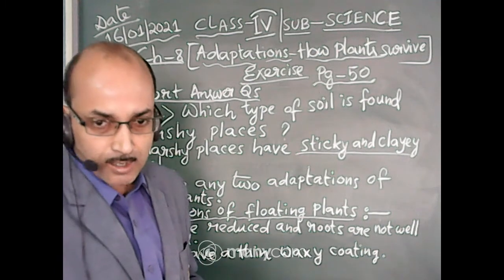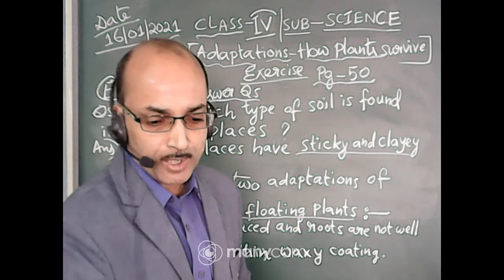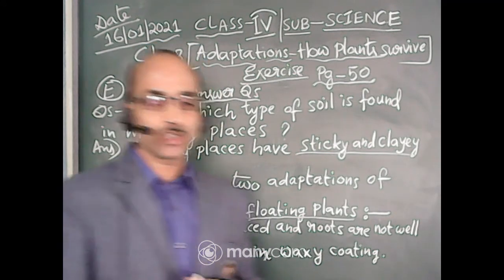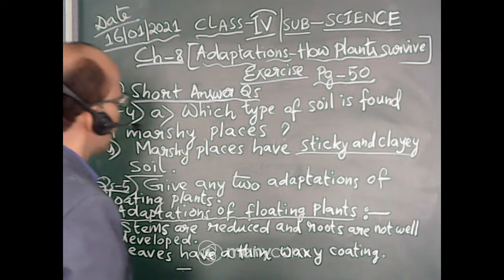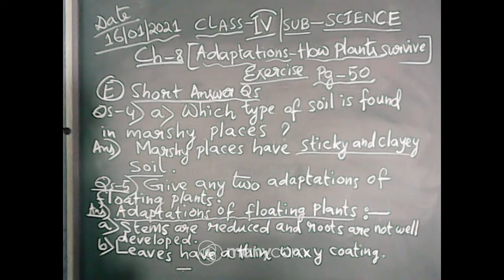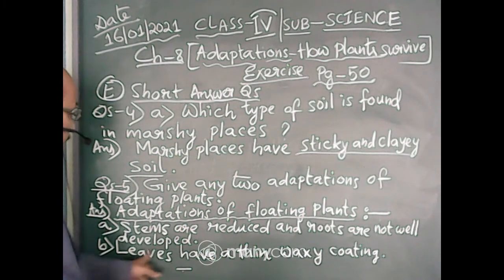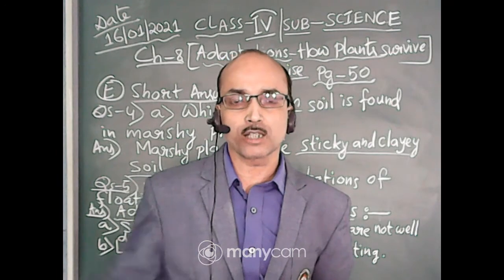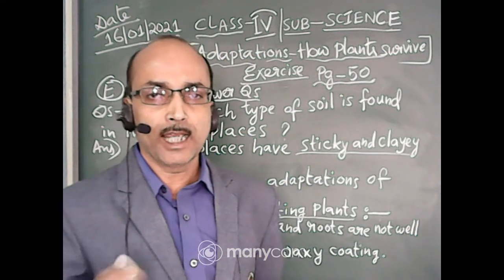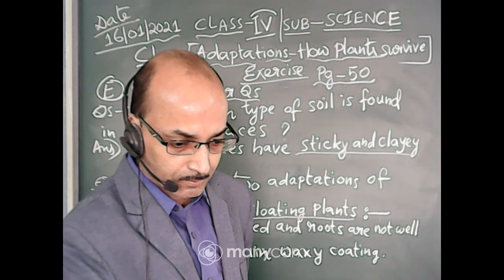That's all for today's class. We have done Question Number 4A and 5. In our next class, we'll be doing the other question answers from the chapter. To recap: which type of soil is found in marshy places? - Marshy places have sticky and clayey soil. Question 5 - adaptations of floating plants: stems are reduced and roots are not well developed, and leaves have a thin waxy coating. So till then, thank you everyone.